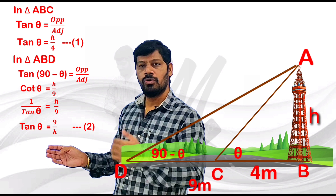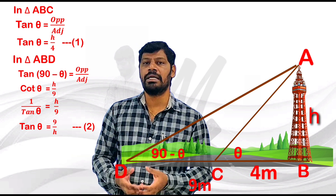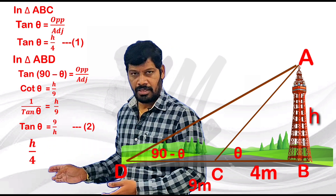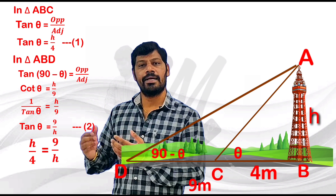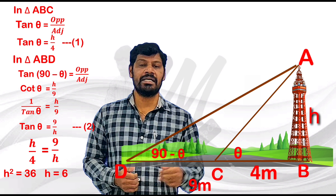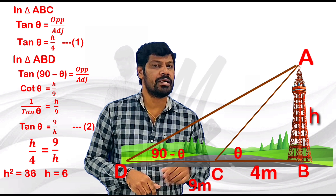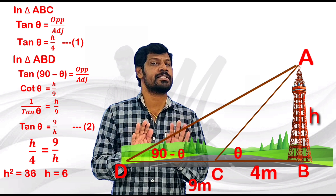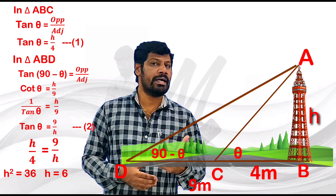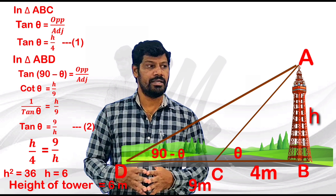Equating the right-hand sides: H by 4 equals 9 by H. Cross multiplication gives H squared equals 36. Therefore H equals 6 meters. Height of tower is equal to 6 meters.